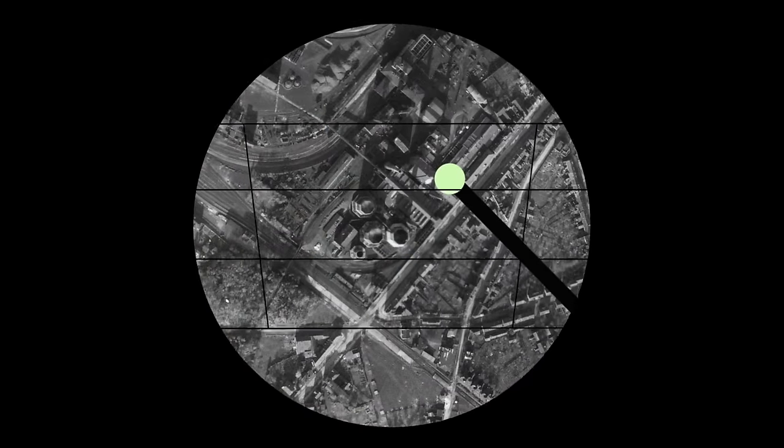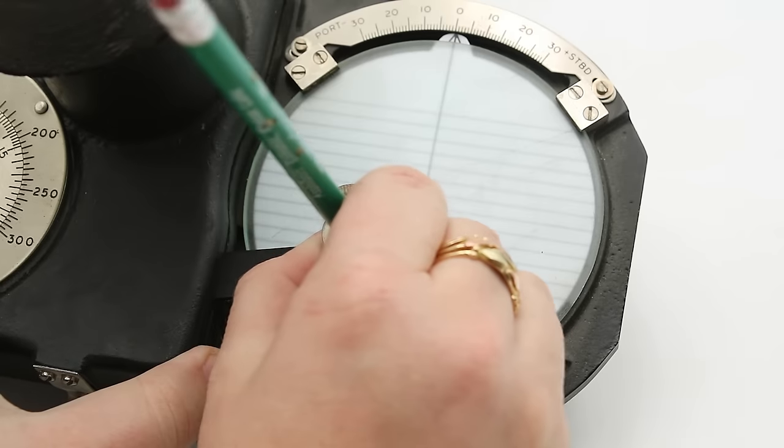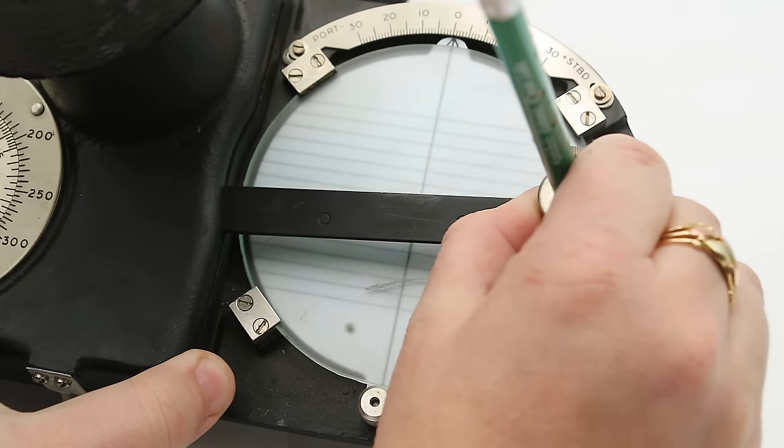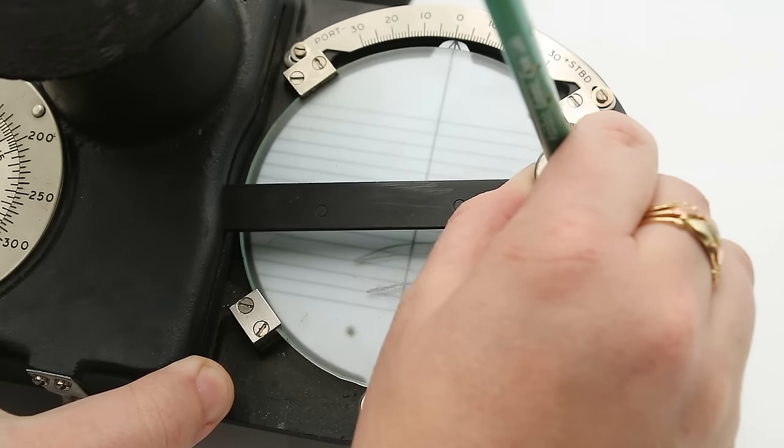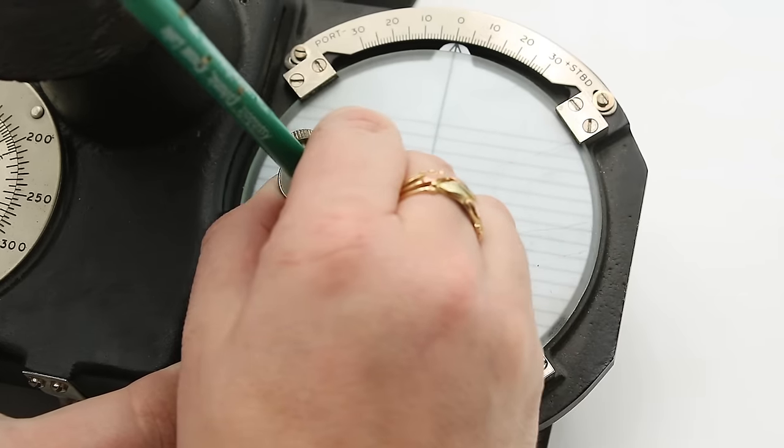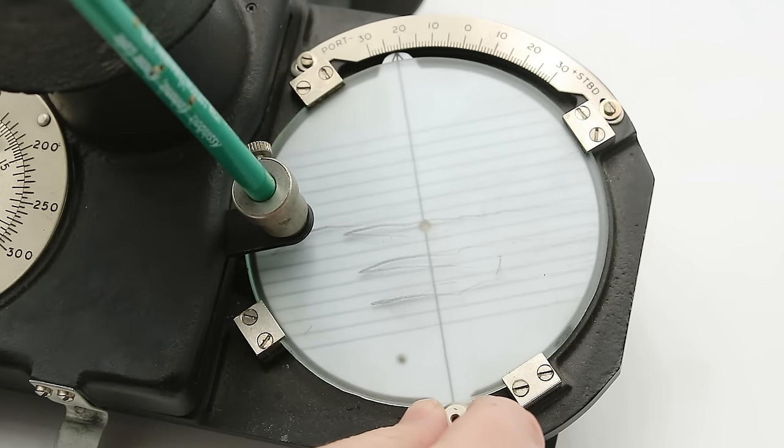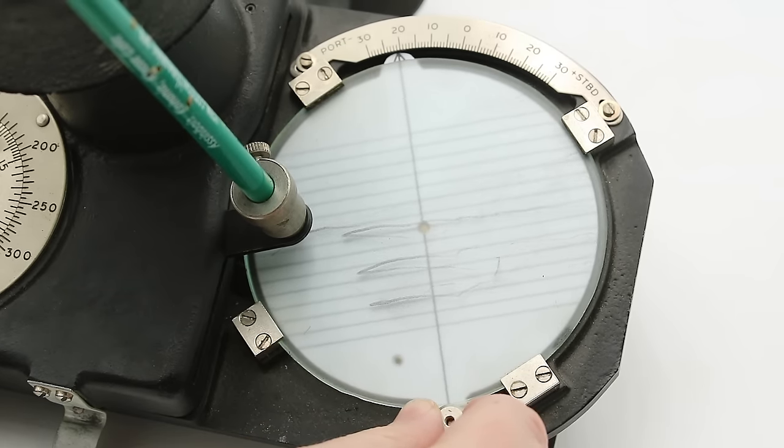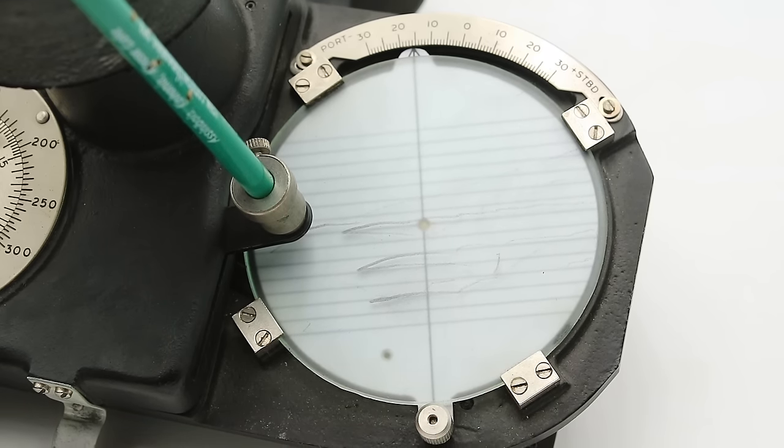You would then use the cursor to track this object as it drifted across the ground below you and in so doing you would scribe a pencil line across the frosted glass disc. You would do this a couple more times until you had a series of parallel lines across the disc. Then you would rotate the disc until those lines lined up with the reference lines on the plastic disc below and then read off your drift angle from the scale.